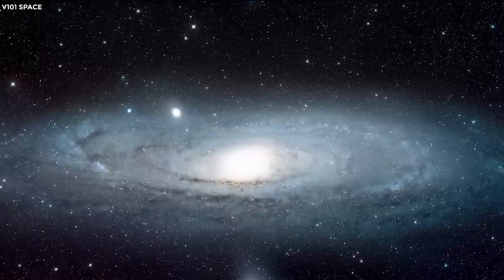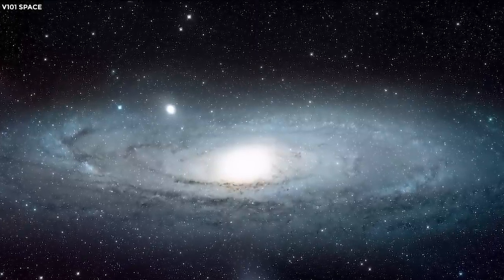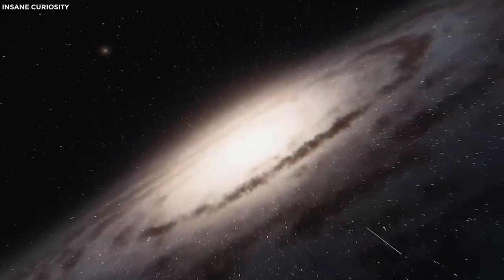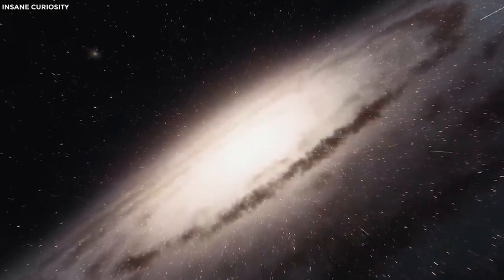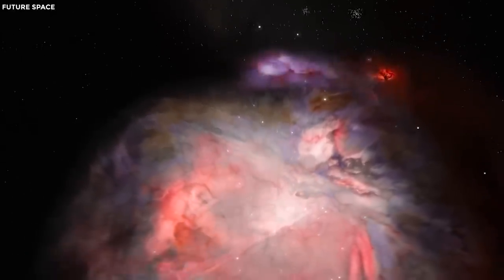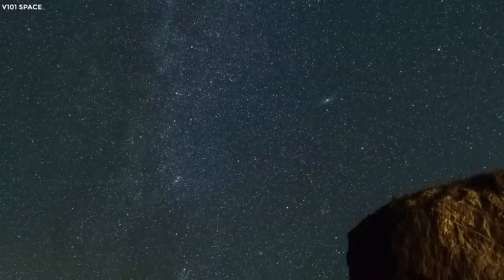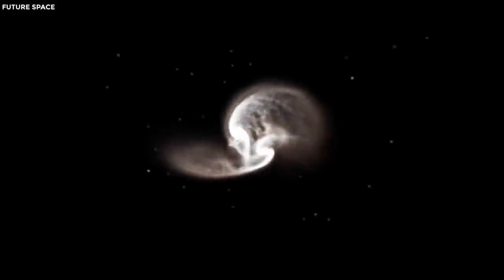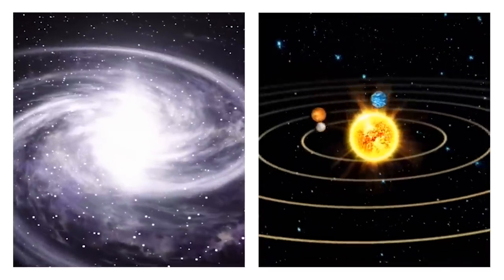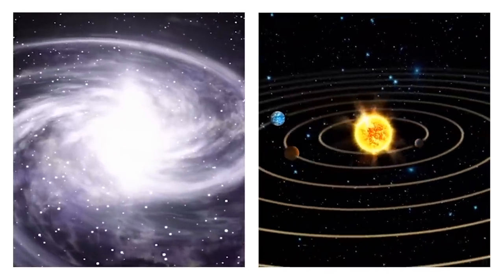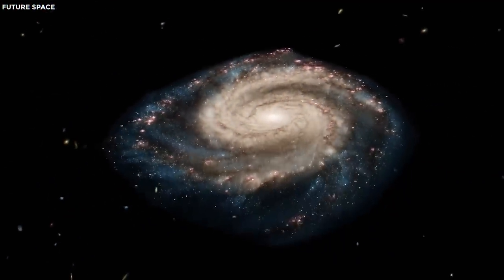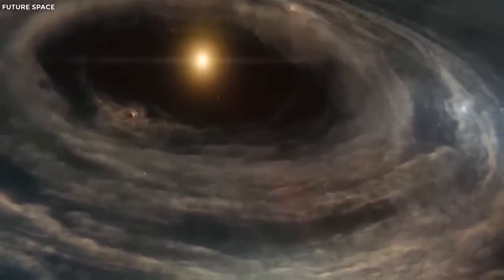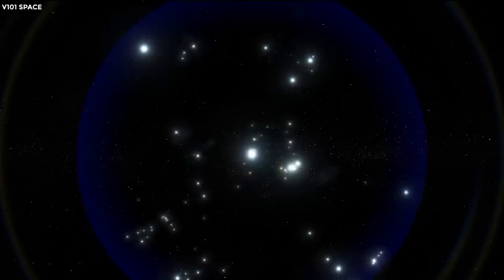But don't be mistaken into thinking that this colossal cosmic entity stands alone in the vast emptiness of space. No, the Andromeda Galaxy commands an entourage of its own of 14 satellite galaxies that orbit around it. These smaller celestial companions form a captivating cosmic family, engaging in gravitational dances that shape not only their destinies, but also the destiny of the main galaxy itself. These interactions are like cosmic conversations written in the language of gravity and motion.